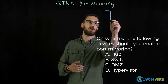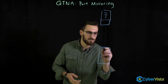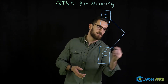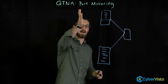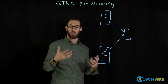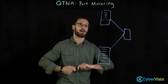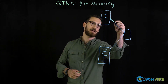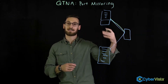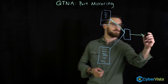Here's how it works: you have a host communicating with a server, and that traffic goes through a network device. With port mirroring, every time the host communicates with the server, we want to inspect that traffic. So on the network device we enable port mirroring, and a copy of the traffic is sent to a different device.